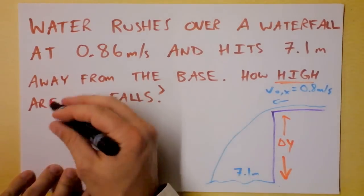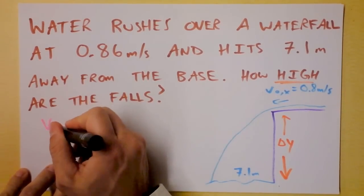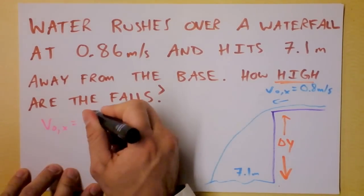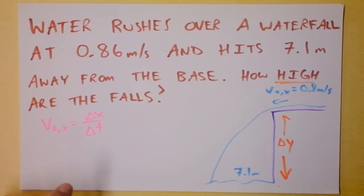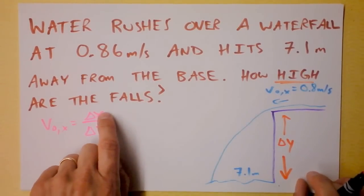Here's our equation. Our equation in the x direction says the velocity initial in the x direction is delta x over delta t and we actually, wait a second, we know v naught in the x direction and we know delta x.